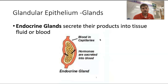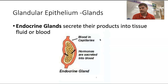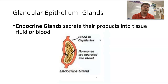Endocrine glands secrete products into the tissues, fluid, or blood — a lot of the time these are hormones, which are chemical signals that trigger different responses in your body. Adrenaline, for example, is secreted by your adrenal glands, which sit on top of your kidneys. Endocrine glands do not use a duct; they secrete directly into the fluid or blood. We'll have a whole unit where we talk about the endocrine system.